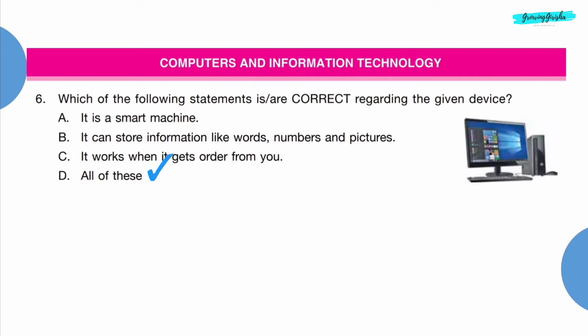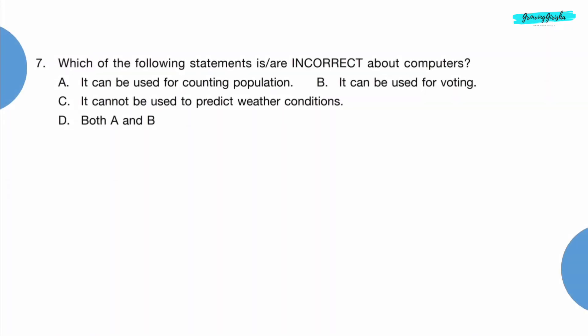Option D, all of these. Question 7: Which of the following statements is/are incorrect about computers? Option C: It cannot be used to predict weather conditions.